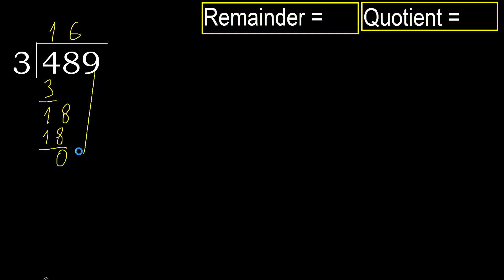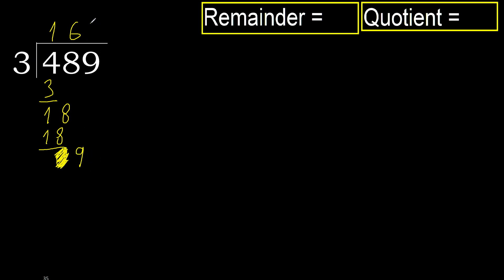Next: eliminate 0. Here, 9. 3 multiplied by 3 is 9 — not greater. Subtract.